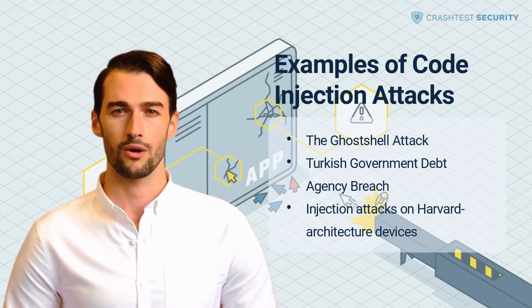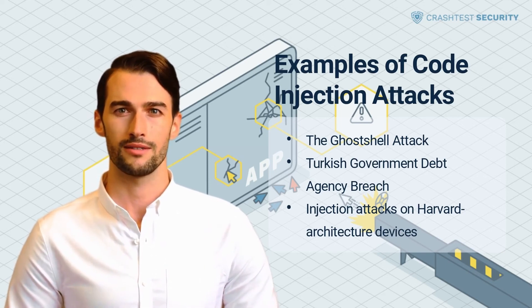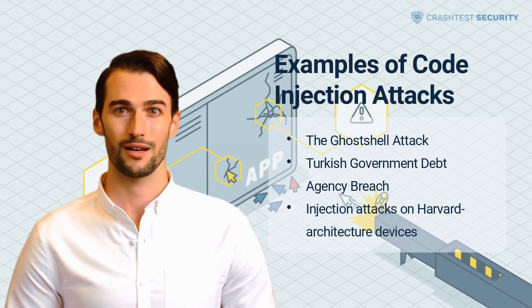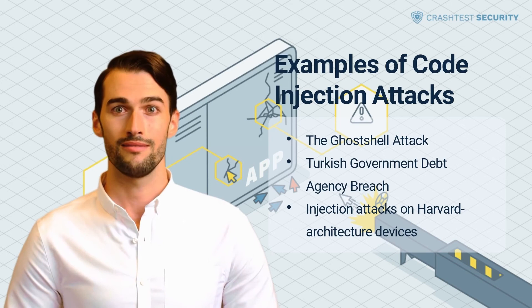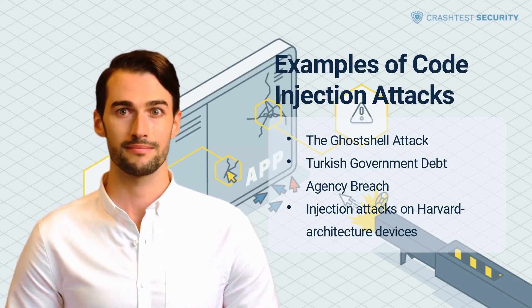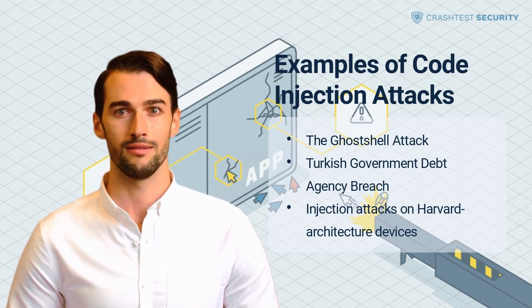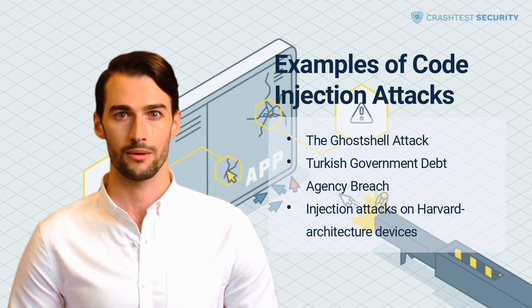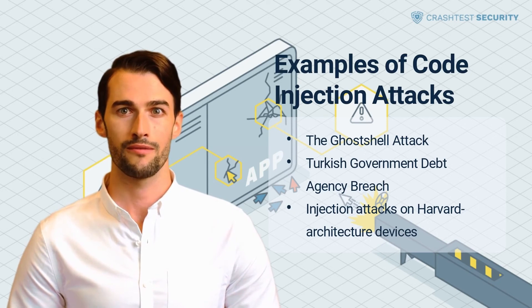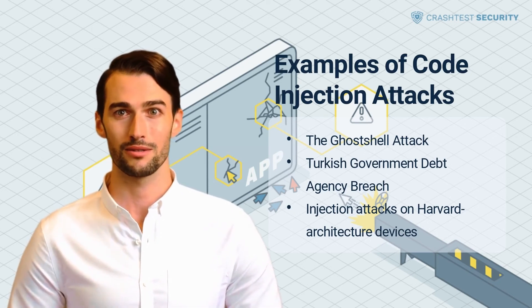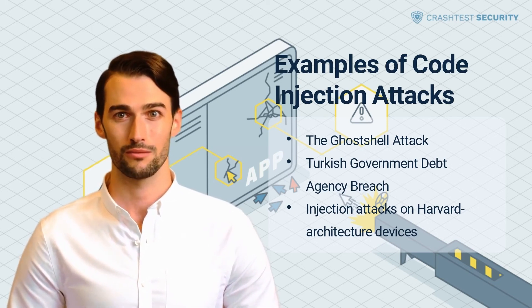Injection attacks on Harvard architecture devices. Cybersecurity researchers at Cornell University proved that buffer overflow techniques could be used to inject code into embedded devices that rely on Harvard architecture CPU design. These devices have limited memory, so they can only process small packets. Using various program vulnerabilities, the researchers proved that it is possible to inject permanent code into sensors so they can gain complete control of the host process.